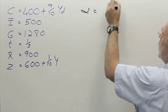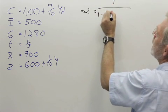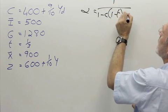So the multiplier is 1 over 1 minus C times 1 minus T, plus M.